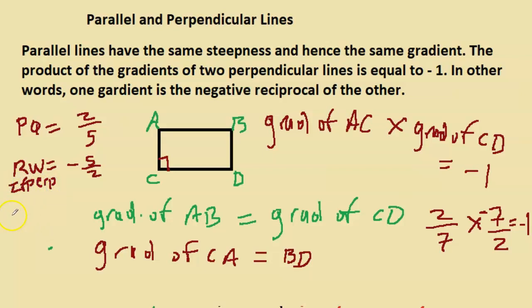And say I have another line AB. Let's say AB is parallel to PQ. What would be the gradient of AB? The same 2 over 5. That's if AB is parallel to PQ. So if you have a line PQ and it's parallel to AB, it would have the same gradient as AB. And if it's perpendicular to R double, then R double would have a gradient of minus 5 over 2.